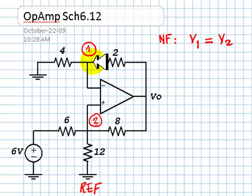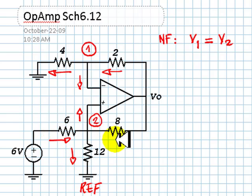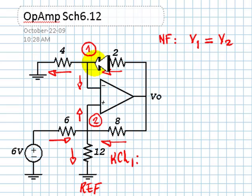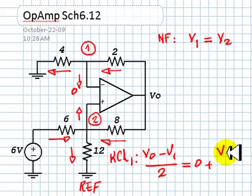We need two more equations. KCL for node number one: let's introduce arbitrary directions for the currents. Currents going into node number one: V0 minus V1 over 2. That equals this current, which is the input to an ideal op-amp — zero amps — plus this current in this branch, which is V1 over 4.